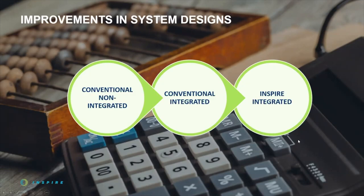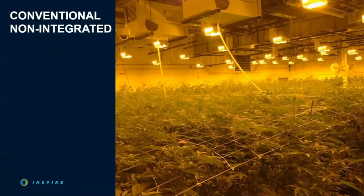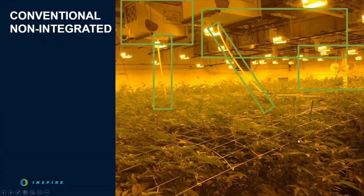Let's start with the conventional non-integrated design approach. Just by looking at this picture, you can recognize this system type because it has a pretty glaring feature: hanging from the ceilings are dehumidifiers. The primary HVAC system that you don't see in the room is most likely a commercial system, probably designed for regular commercial or office building type loads. We're used to seeing mini-splits or off-the-shelf package rooftop units serving these rooms. This is why we call it a conventional system — it just can't handle the humidity levels required for a cultivation space alone. Hence, we have all these de-hums installed in between the lights.